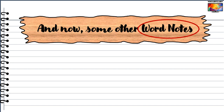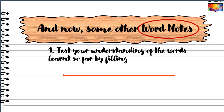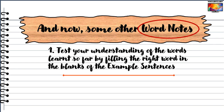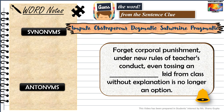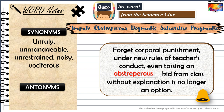Now we have reached the second half of this lesson, targeting the usage of these five words through sentences. We will test your definitions by filling in blanks. The first sentence: 'Forget corporal punishment — even tossing an obstreperous kid from class without explanation is no longer an option.' The correct word is obstreperous, meaning noisy and difficult to control. Synonyms include unruly, unmanageable, unrestrained, noisy, and vociferous. Antonyms are calm, quiet, and restrained.